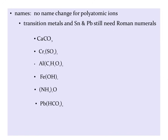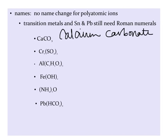When we name ionic compounds that have polyatomic ions in them, all we do is write down the name of the polyatomic ion. There is no spelling change for the name of a polyatomic ion. So in the first example, we have Ca, which is calcium, and then we have CO3, which is carbonate. We know that there has to be a polyatomic ion in this compound because it's not binary — it's not made of two elements, it's made of three elements. So somewhere in there has to be a polyatomic ion. Most polyatomic ions are negatively charged, or anions, so it's often best to look at the back half of the compound for the polyatomic ion.